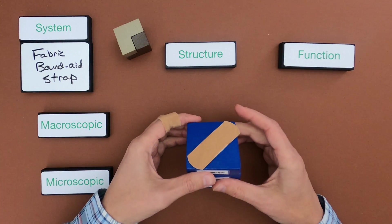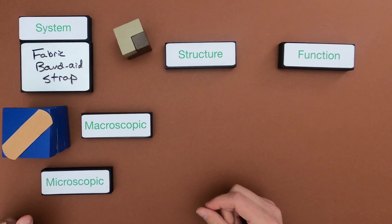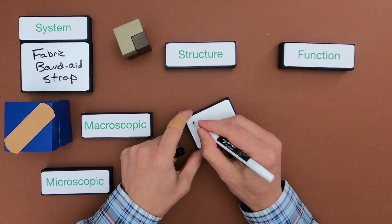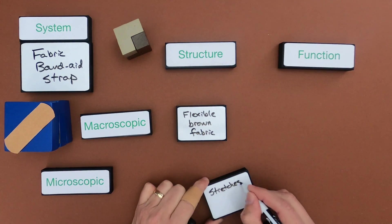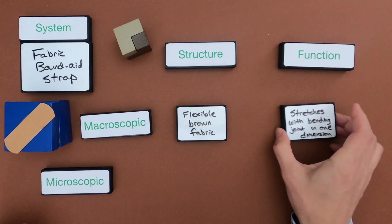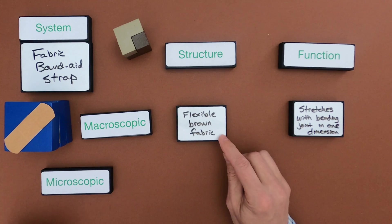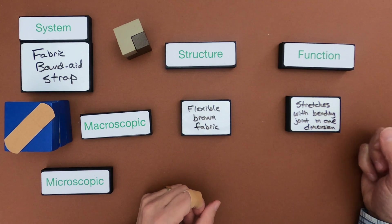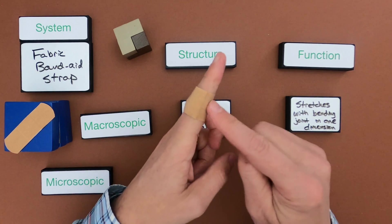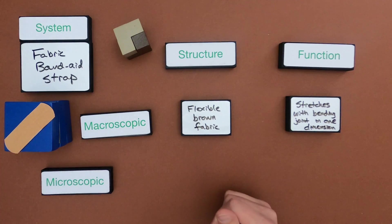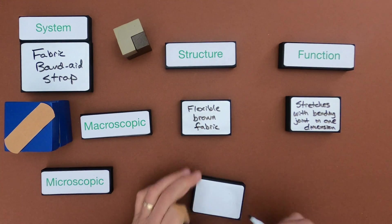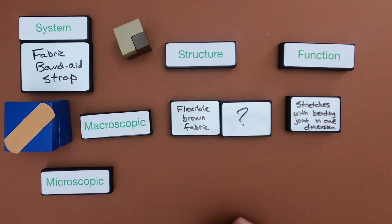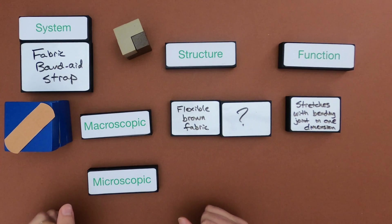Looking at the band-aid macroscopically: unlike Velcro, I really only see one structure — this flexible brown fabric. The function is that it stretches with the bending joint in just one dimension. As I bend it, it stretches along the joint but doesn't stretch in the other dimension. But when it comes to understanding how this structure leads to this specific function, I'd have to put a big question mark. I don't really know how this structure leads to this function. So I have to start looking at it at the microscopic level — I have to change my level of scale.